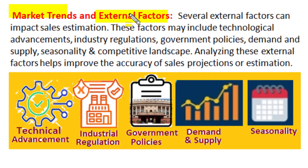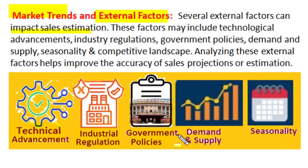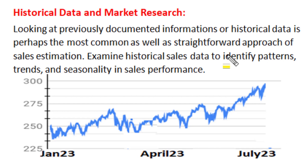Several external factors can set and modify market trends, and these external factors can impact sales estimation for our project. These factors may include technological advancements, industrial regulations which can be imposed on us, government policies that influence our working, or demand and supply fluctuations in the market. Even seasonality can set market trends. We also have to consider the competitive landscape and what other competitors can offer to influence our sales target. Analyzing all these external factors helps to improve the accuracy of sales projections.